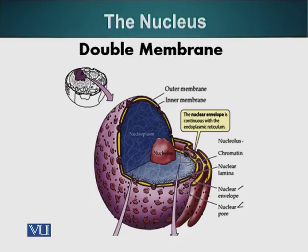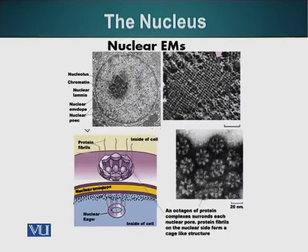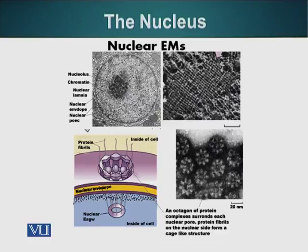Now let's look at other features of the nucleus. Nuclear pores have an octagonal symmetry, which means that each nuclear pore is made up of eight similar proteins. These proteins are arranged to form the periphery of the hole present in the nucleus. The proteins making this nuclear pore have to be very selective about what molecules they allow in and what molecules they allow to leave. Small molecules can pass through these nuclear pores very easily, however larger molecules are regulated.